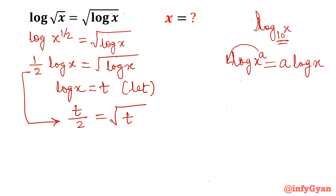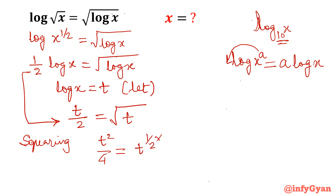Because of the square root, I will square both sides. After squaring it will be t squared over 4 equal to t to the power half times 2, so that 2 will get cancelled. So t squared over 4 equals t.